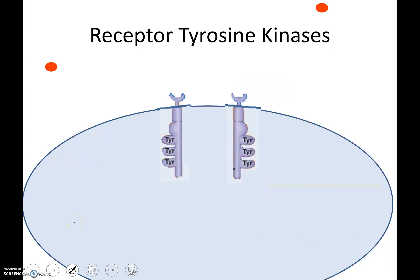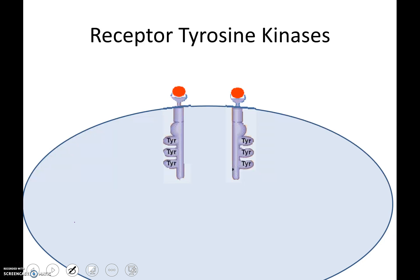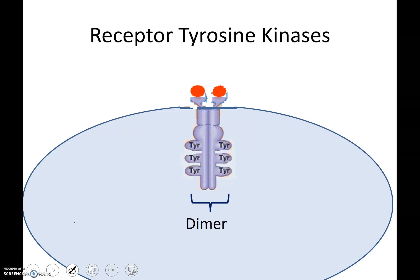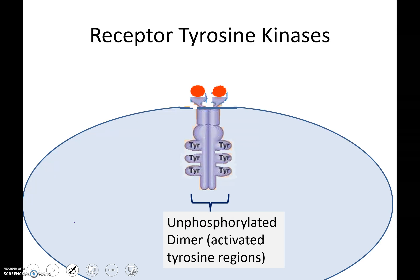When the signaling molecule like insulin or growth factor comes and attaches to that signal binding site, these two separate polypeptides are going to aggregate or come together. We call this a dimer. Now right now, this dimer is unphosphorylated, but it does have activated tyrosine regions.